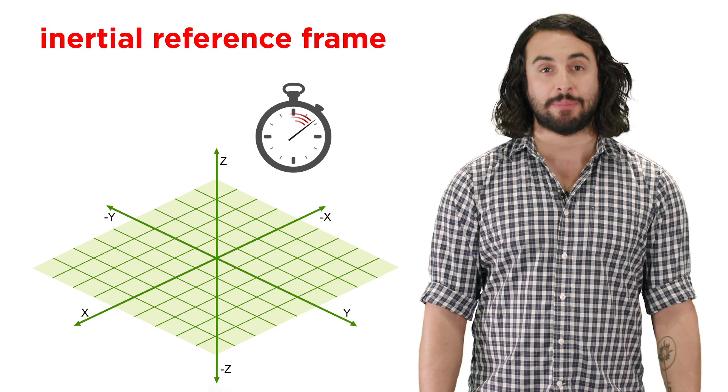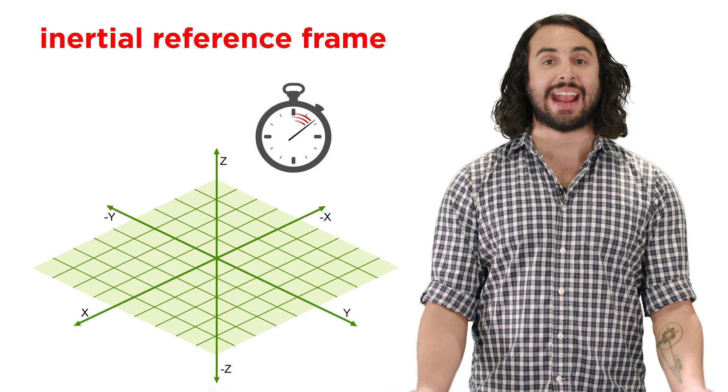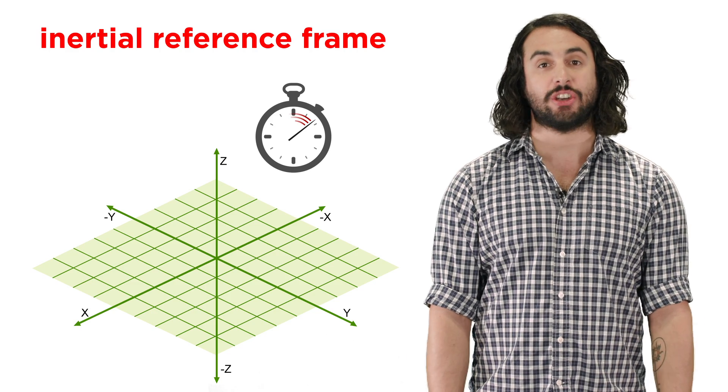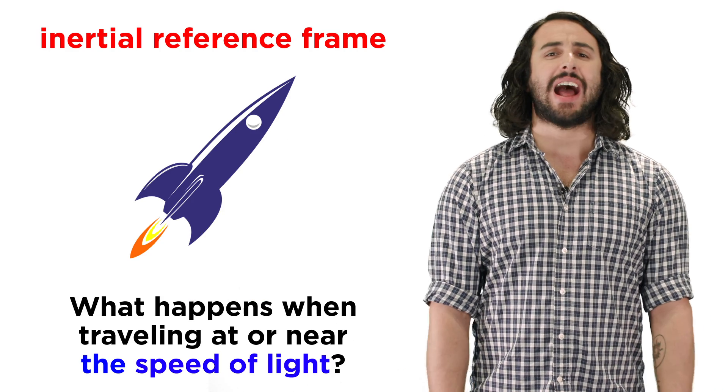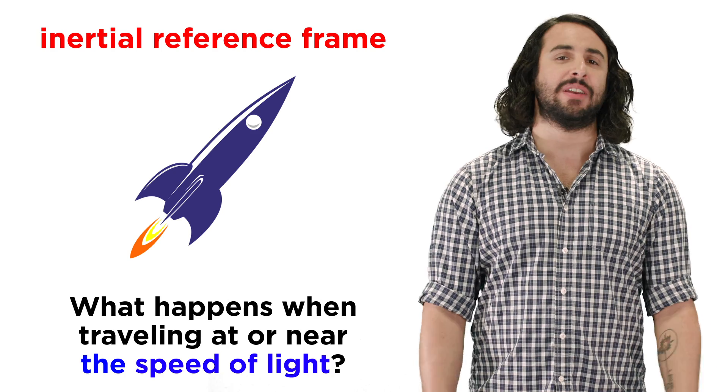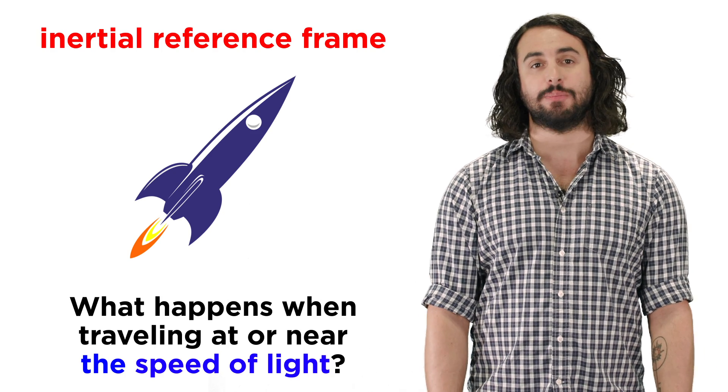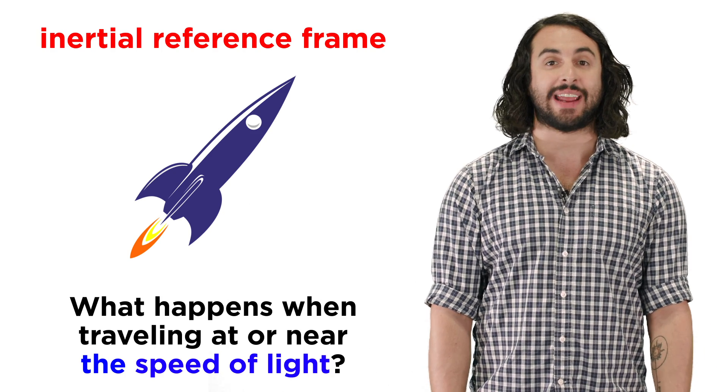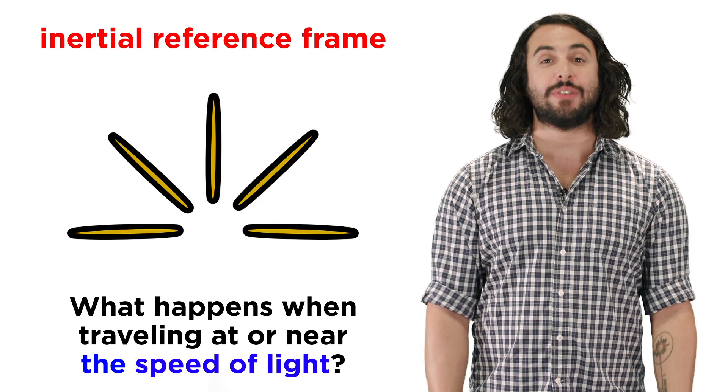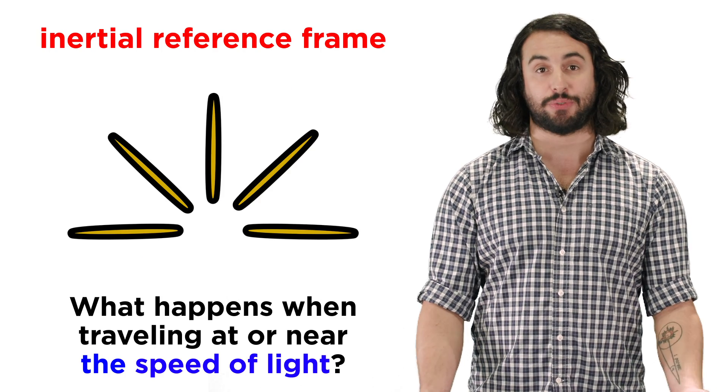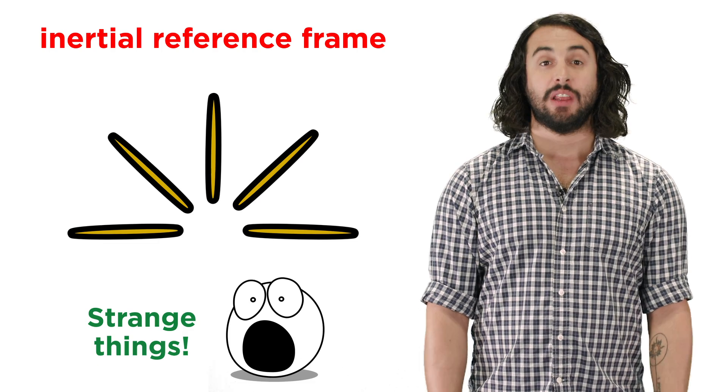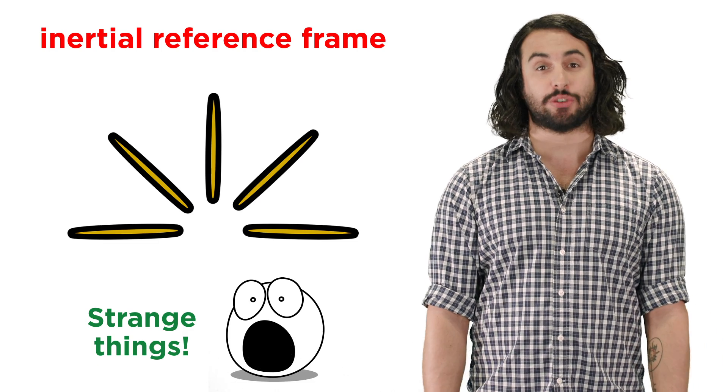Each inertial reference frame has its own set of axes and a clock, whether real or imaginary, to measure time. But Einstein wondered what would happen if you assigned an object moving very close to the speed of light as the inertial reference frame, or even a beam of light itself. What would happen then? As it turns out, some pretty strange things.